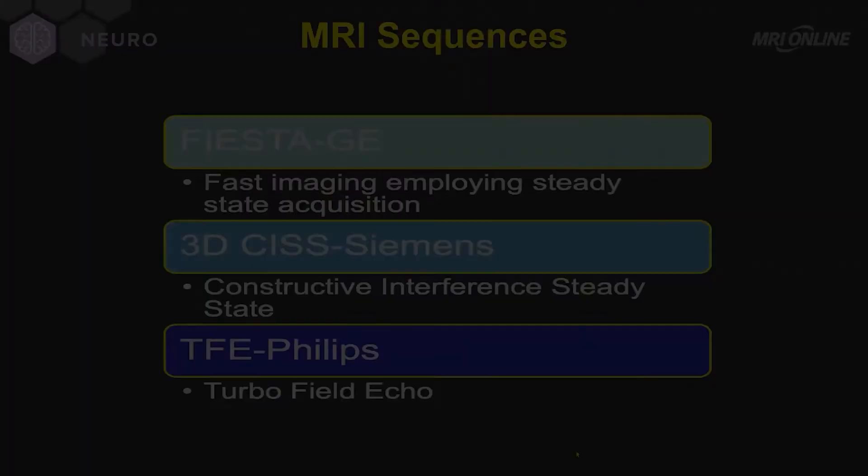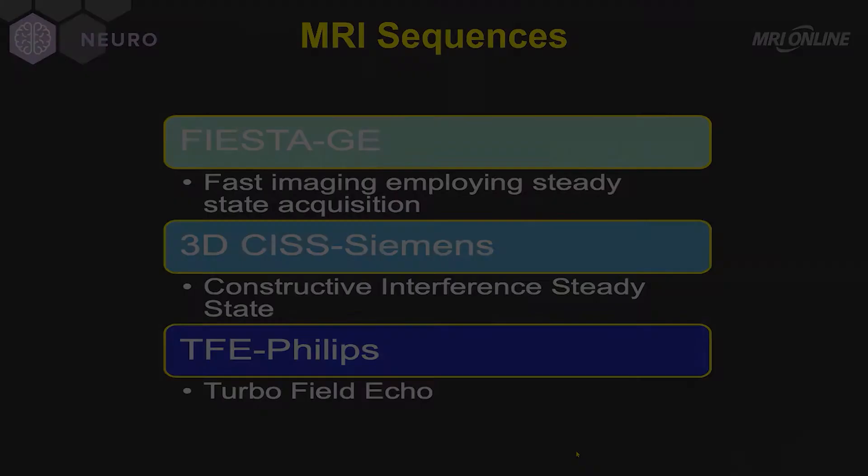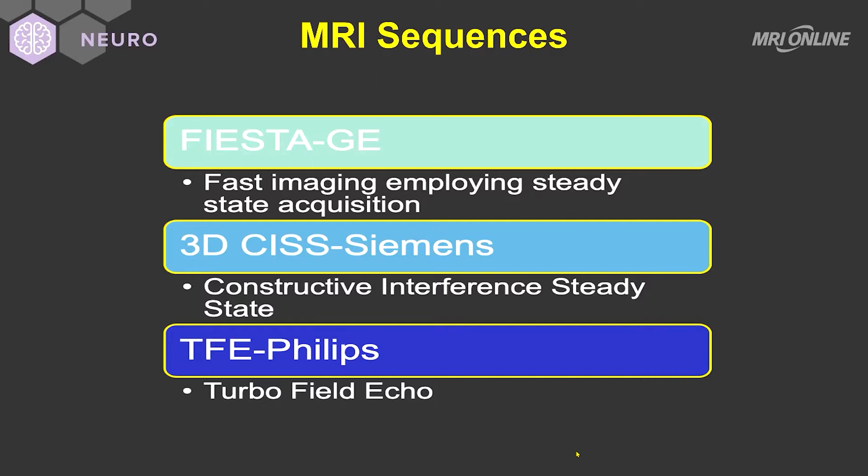Just as we employ thin section imaging in CT scanning, we have to employ thin section imaging on MRI as well. These are usually sequences that are T2-weighted, with bright CSF signal. The reason we want bright CSF signal is so we can see the endolymph and perilymph within the cochlea and vestibular system. The pulse sequences typically used are referred to as Fiesta on the GE scanner, 3D CIS on Siemens, and TFE or Turbo Field Echo on Philips.